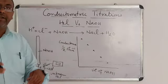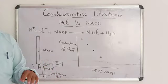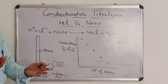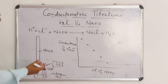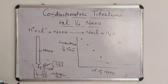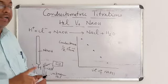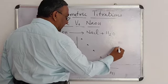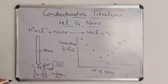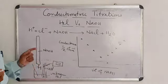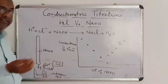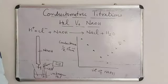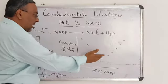When all the H+ ions are completely neutralized or completely replaced by OH⁻ ions, and no more H+ ions remain, the end point is reached. After the end point, the excess addition of sodium hydroxide supplies OH⁻ ions, which have very high conductance. Therefore, conductance suddenly increases. This increase in conductance is due to the OH⁻ ions of excess sodium hydroxide added after the end point.